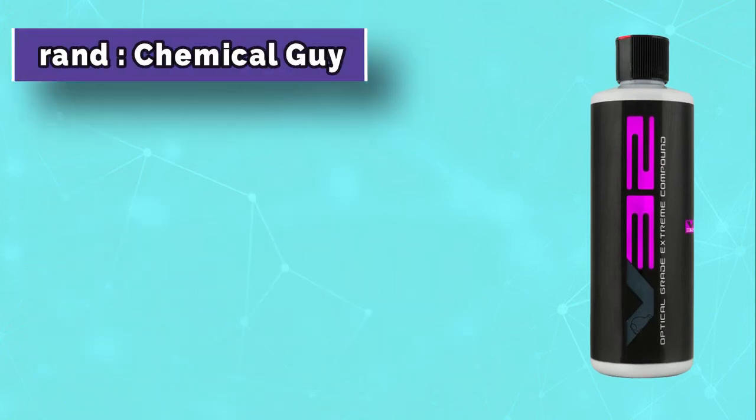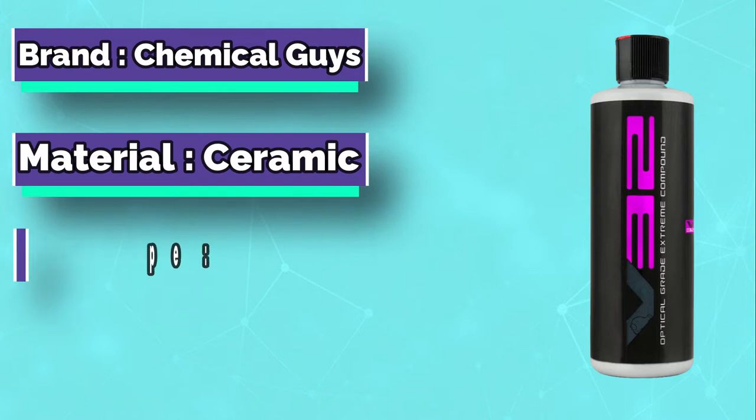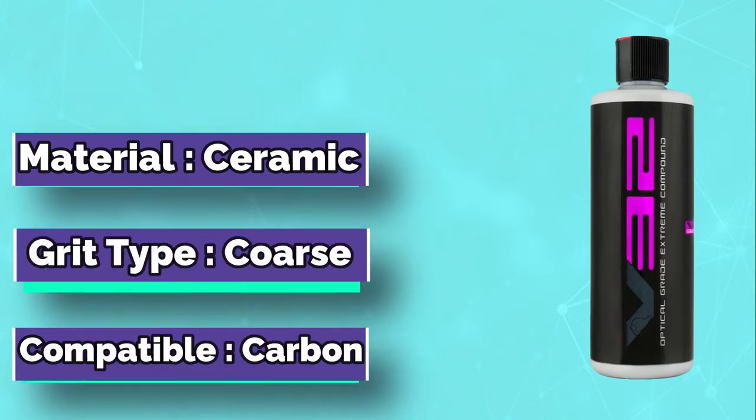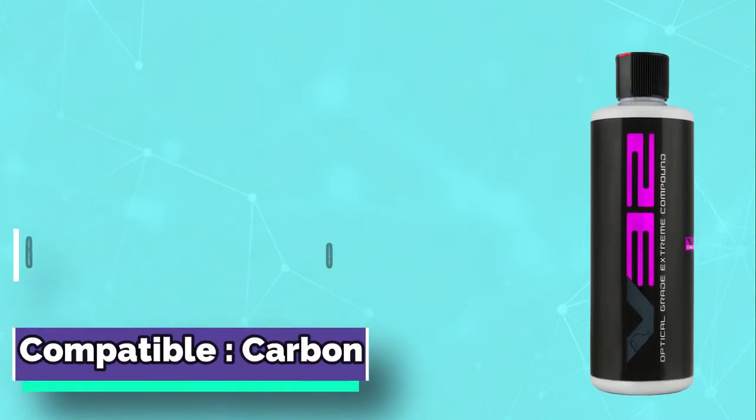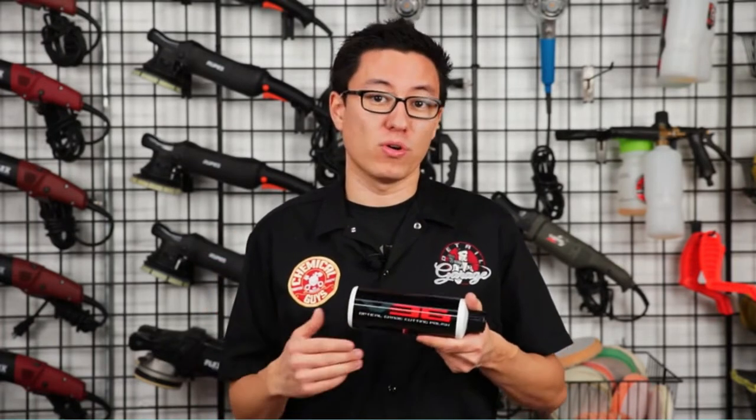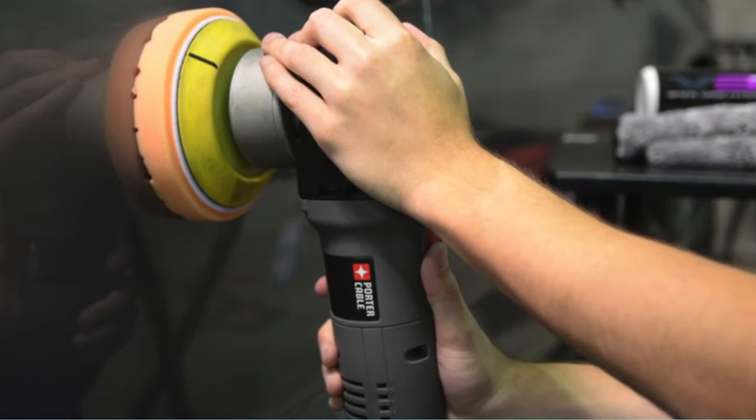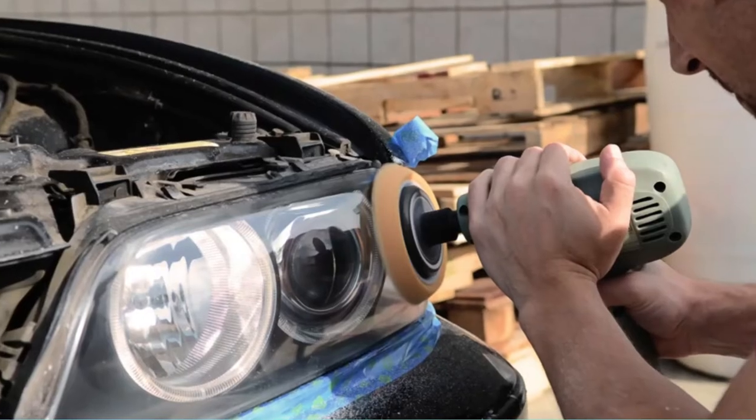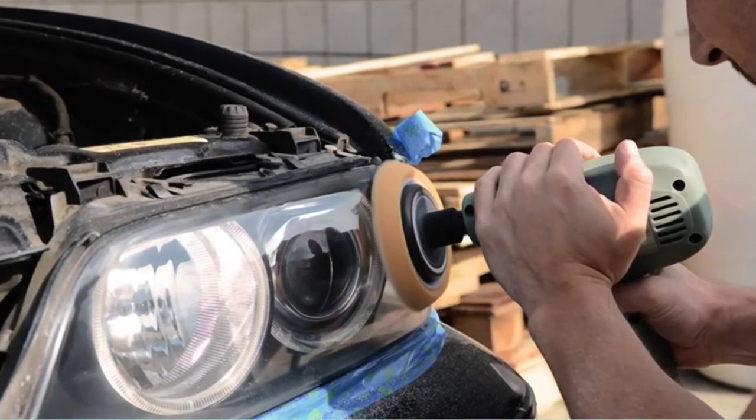The Chemical Guys V-Line of compound and finishing products have gotten plenty of positive feedback from detailers and enthusiasts alike. The kit includes 16-ounce bottles: V-32 Optical Grade Extreme Compound, V-34 Optical Grade Hybrid Compound, V-36 Optical Grade Cutting Polish, and V-38 Optical Grade Final Polish.